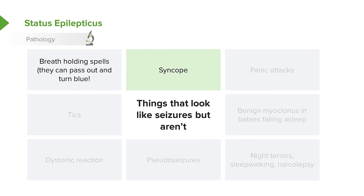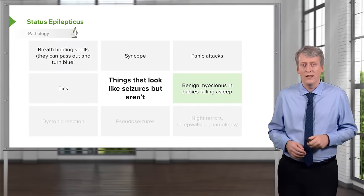Syncope can look like a seizure. Panic attacks are often mistaken for seizures, especially since when patients breathe very quickly, they get a respiratory alkalosis that can cause carpal-pedal spasm of the hands. If you see a patient who looks scared with clenching of the fists, that's almost always a panic attack and all that's required is calm. Tic disorders may look like a focal seizure — and keep in mind ticks can be fairly complex.